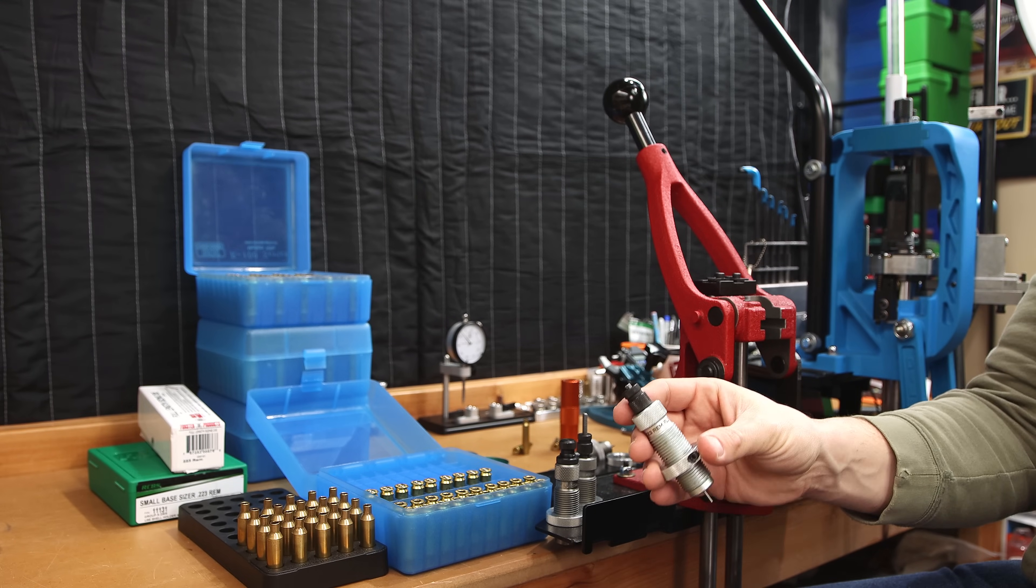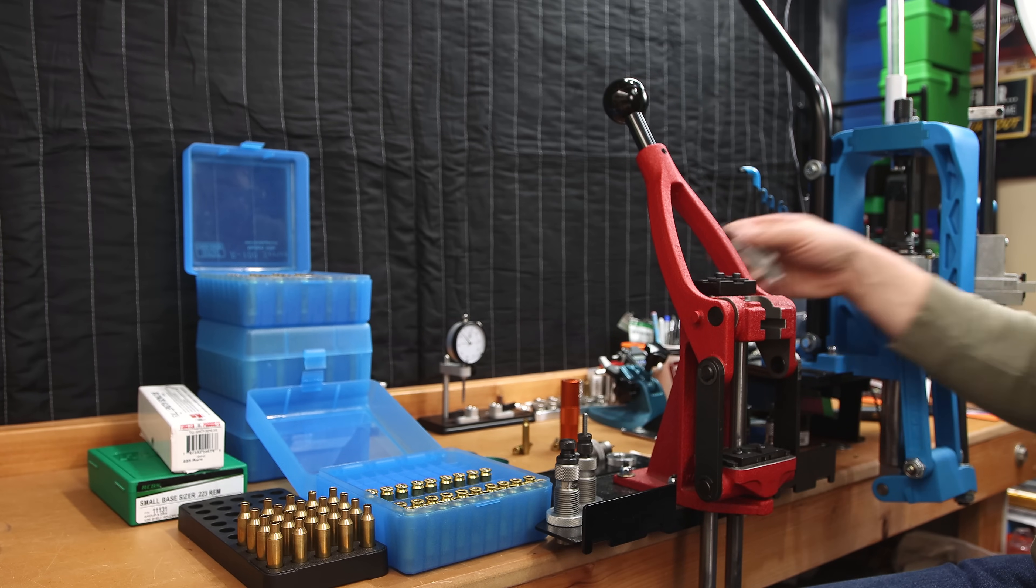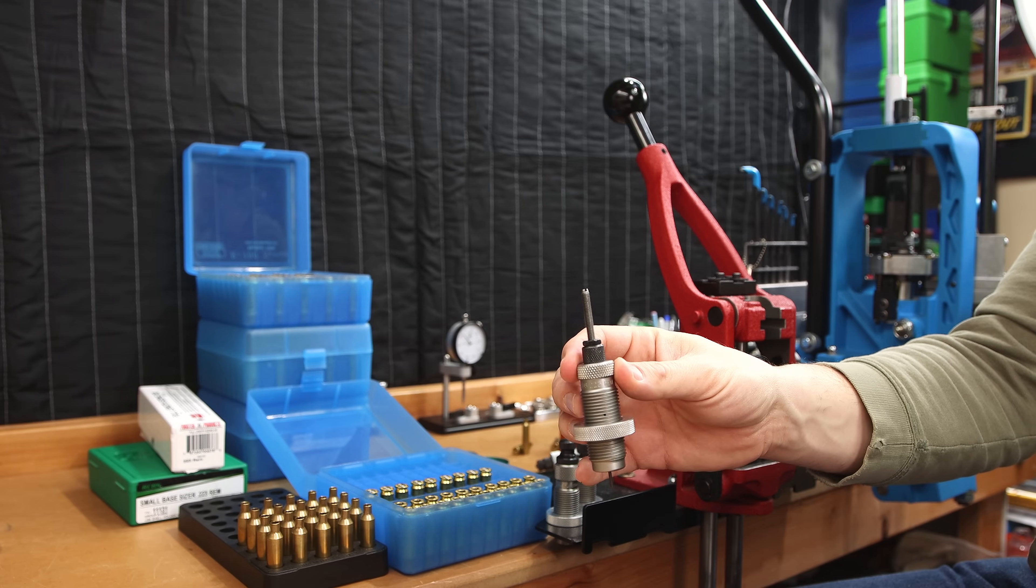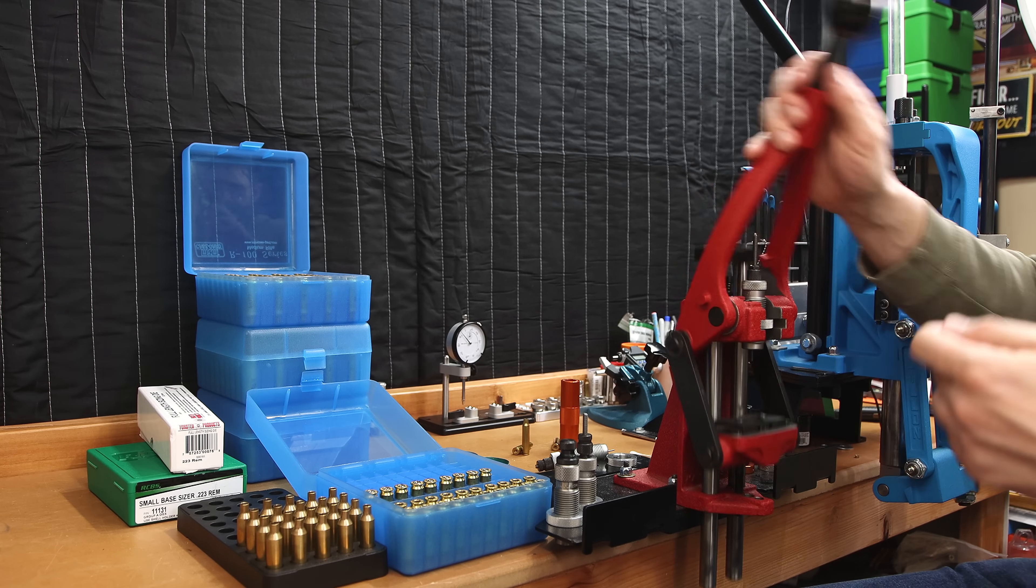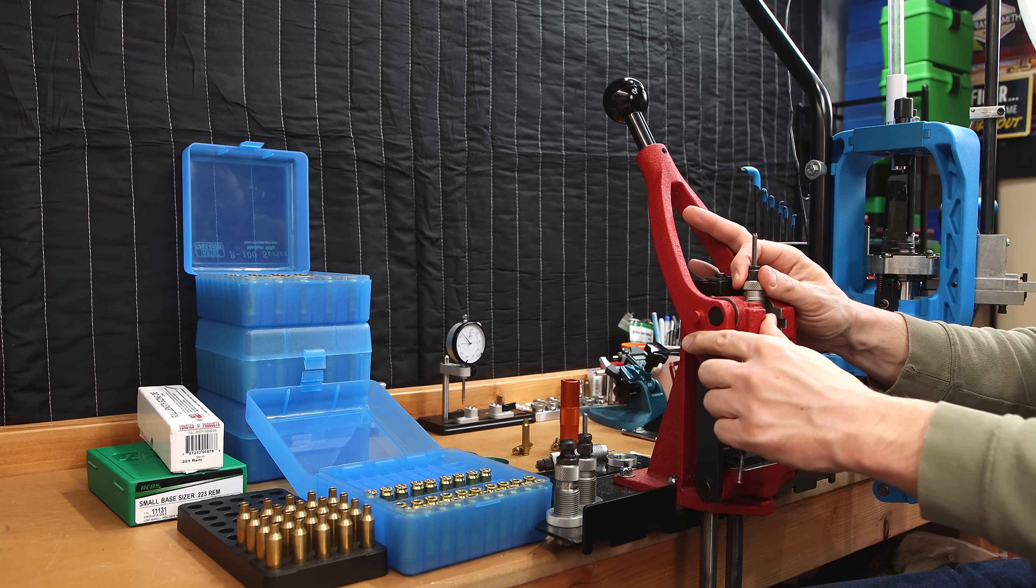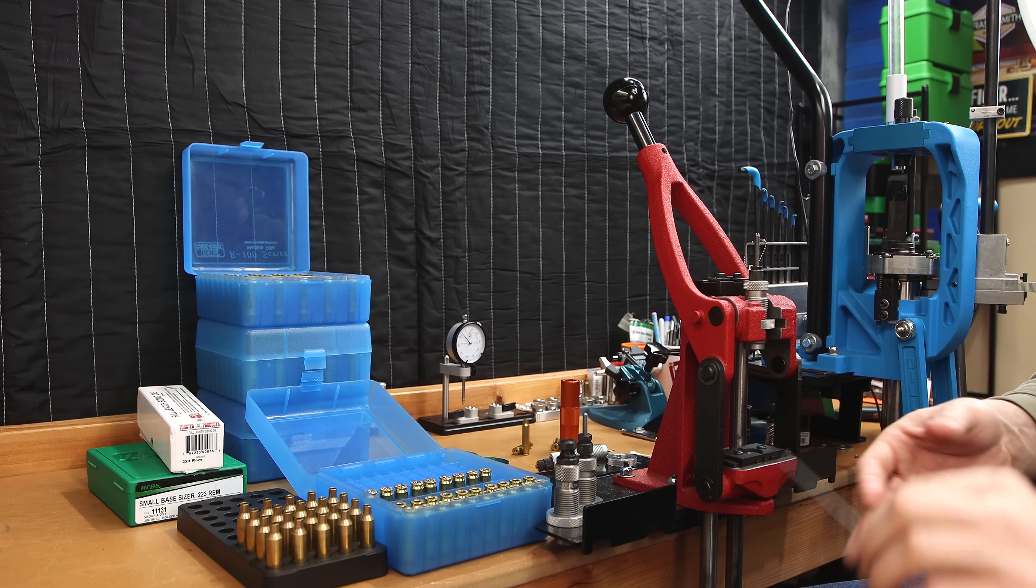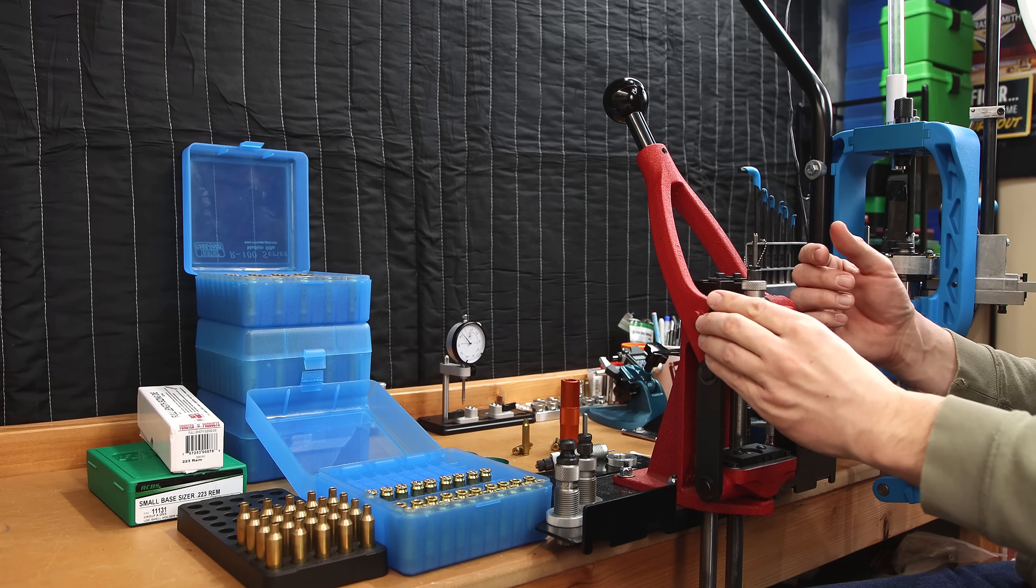Maybe that's just a Forester thing, right? Well, let's pick up our RCBS. Again, basically my brand new RCBS small base sizing die set up our sizing die so we just make contact, give it that extra eighth of a turn. Might not even be that, it's certainly nowhere close to a quarter.